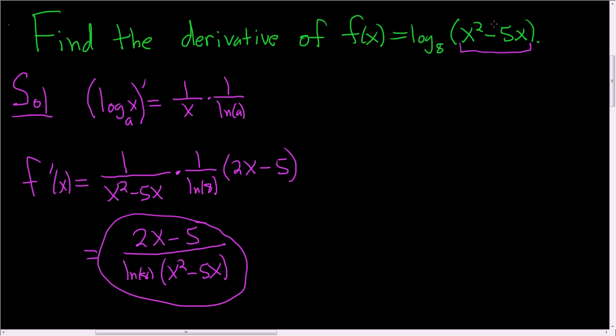So again, when you take this derivative, it's just 1 over this thing, and then 1 over ln 8, and then the derivative of the inside. And the derivative of the inside is right here, and that's via the chain rule.